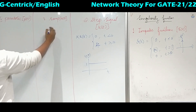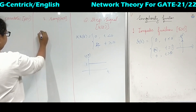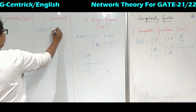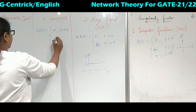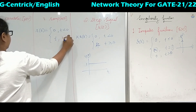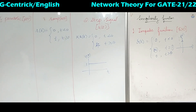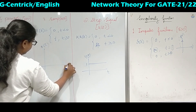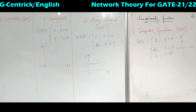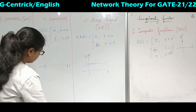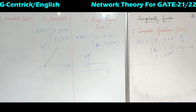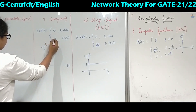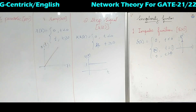Coming to the next signal, ramp, denoted by r of t. It is defined as: 0 for t less than 0, and t for t greater than or equal to 0. Its graph is a straight line passing through the origin. If a coefficient is given, you can include it accordingly.